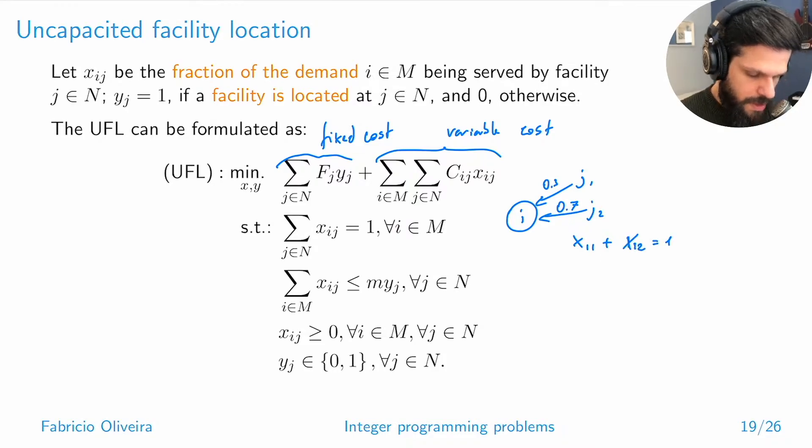This constraint models the logic behind the problem. The logic it represents is that you can only serve node i from facility j if that facility has been actually located. If y_j is one, then the sum of all i's x_ij has to be less than or equal to M, where M is the number of clients. This means you can send 100 percent to client one, 100 percent to client two, and so on. If you take 100 percent for each client, the maximum you can have is one facility satisfying all clients at 100 percent, which adds up to the number of clients.